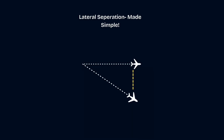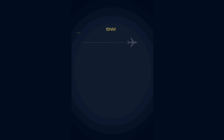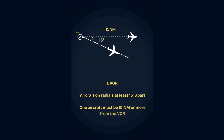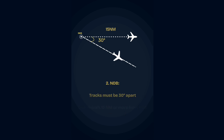Now let's move on and learn about lateral separation. With VOR, aircraft must fly on radials at least 15 degrees apart, and one of them should be 15 nautical miles or more from the VOR. With NDB, the separation angle increases to 30 degrees apart.